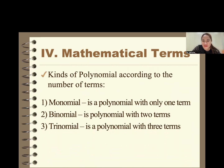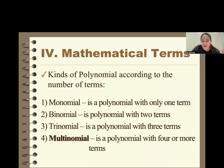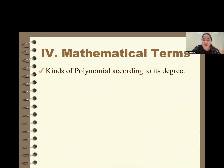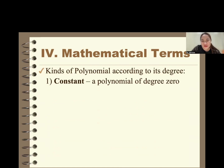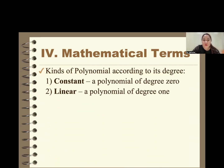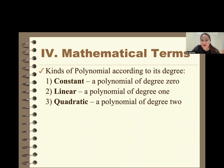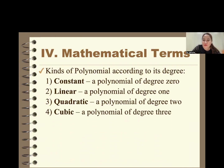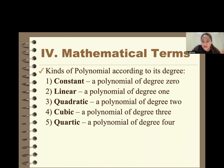The types of polynomial according to degree are: degree 0 is a constant, degree 1 is linear, degree 2 is quadratic — such as an ellipse, circle, or parabola. Degree 3 is cubic. Degree 4 is quartic. Degree 5 is quintic. Polynomials of higher degree have no universal name and can simply be called polynomial.